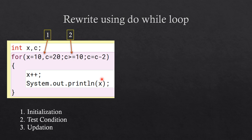The second thing to note is the test condition. Here you can see c greater than or equal to 10 is the test condition. Then finally the updation statement — that is c equal to c minus 2. In a for loop, all three of these are given in the same line.